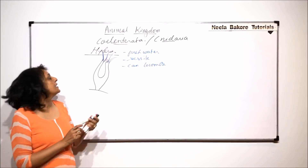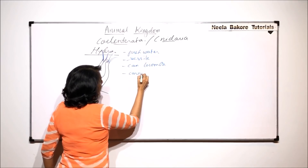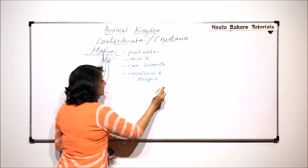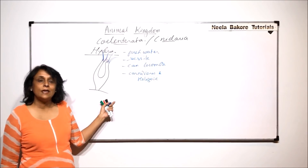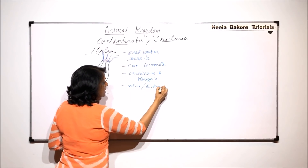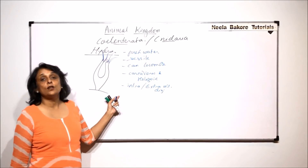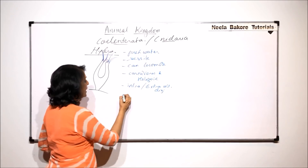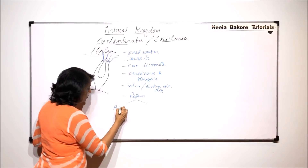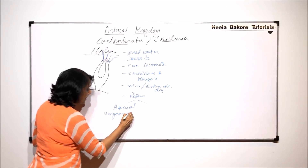In the case of Hydra, they are carnivores and holozoic. Digestion is both intra- and extracellular. Reproduction is also of two types — asexual as well as sexual. Asexual reproduction is by formation of exogenous buds.